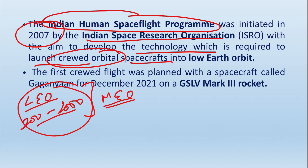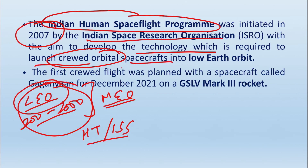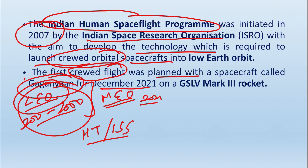In low Earth orbit, we have the Hubble Telescope and the International Space Station. This mission will be accomplished with the help of the GSLV Mark III rocket.